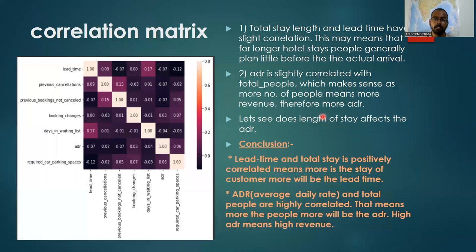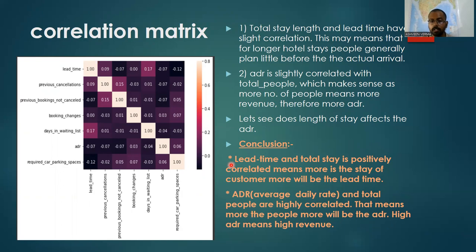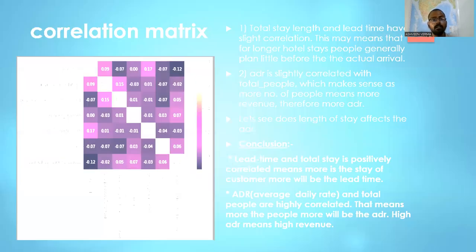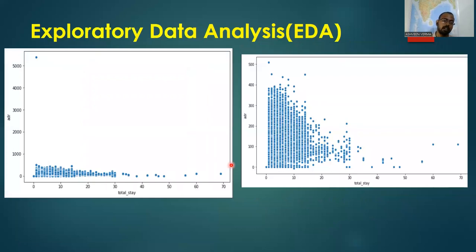Let's see the correlation. Total stay length and lead time have a slight correlation, meaning that for longer hotel stays, people generally plan a little ahead of the actual arrival. ADR is slightly correlated with total number of people, which makes sense as more people means more revenue and therefore higher ADR. Lead time and total stay are positively correlated — more stay means more lead time. ADR and total people are highly correlated, so more people means higher ADR, which means higher revenue.